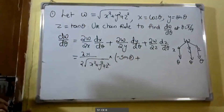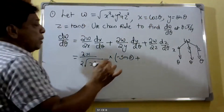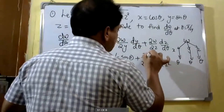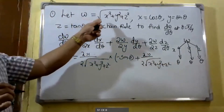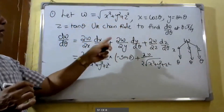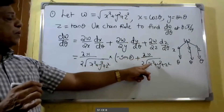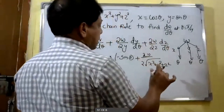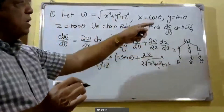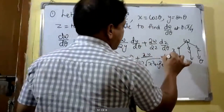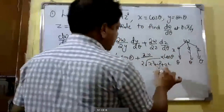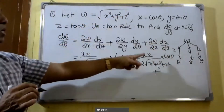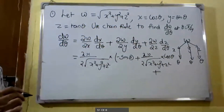Then (∂w/∂y): differentiating w = √(x² + y² + z²) with respect to y gives ∂w/∂y = (1/2)·(1/√(x² + y² + z²))·2y = y/√(x² + y² + z²). Since y = sin θ, dy/dθ = cos θ. Then (∂w/∂z): differentiating w with respect to z gives ∂w/∂z = z/√(x² + y² + z²).